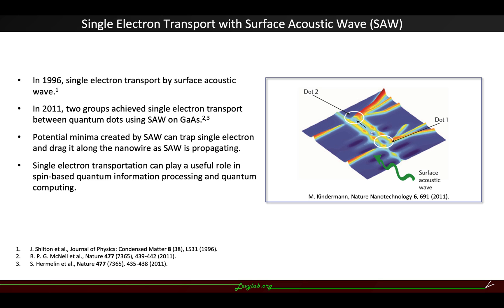In 1996, University of Cambridge first achieved single electron transport by surface acoustic wave. More excitingly, in 2011, two groups achieved single electron transport between quantum dots using surface acoustic wave on gallium arsenide.